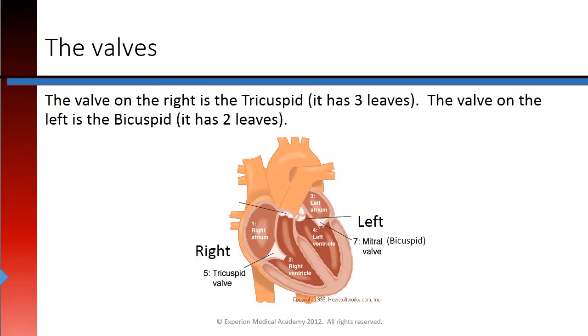The valve on the right is the tricuspid — it has three leaves. And the valve on the left is the bicuspid because it has two leaves.